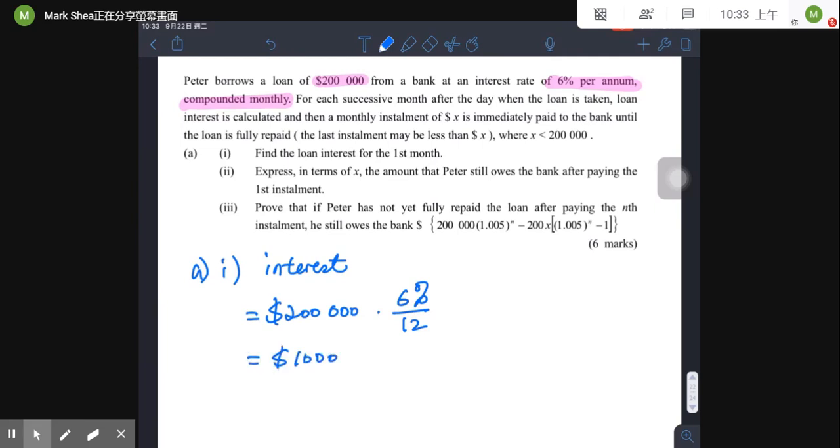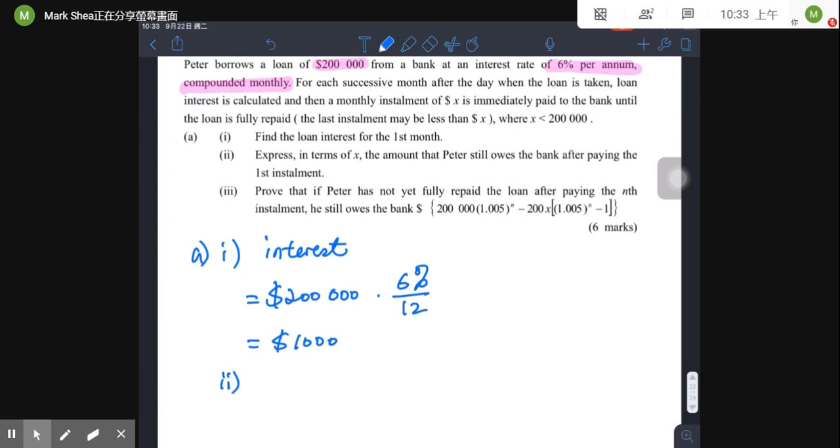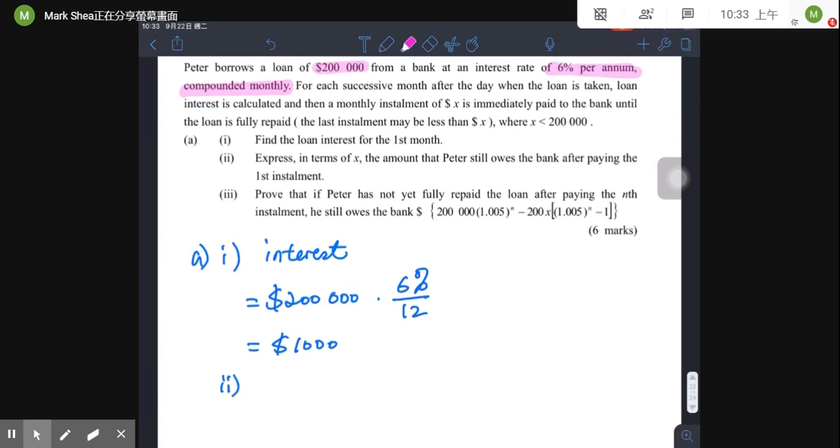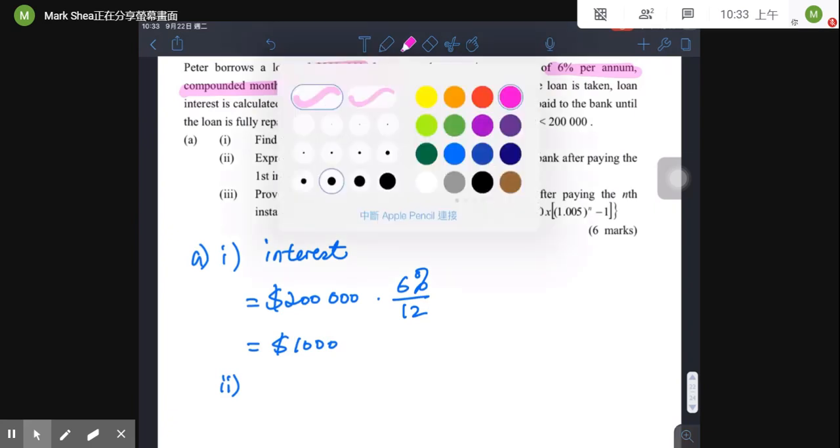So part A(i), part A(i). For A(ii), what is the required amount? Let's go back to the question. Peter, because you will see from the question there are